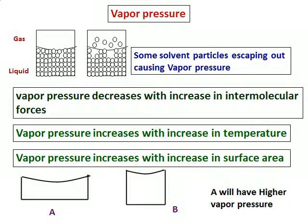Vapor pressure also increases with increase in temperature. So if I heat the beaker, more molecules will go into gas phase. Vapor pressure increases with increase in surface area. Compare the two beakers, beaker A and beaker B. Obviously, beaker A will have larger evaporation and hence will have a higher vapor pressure.